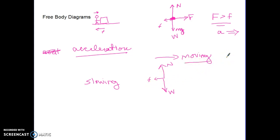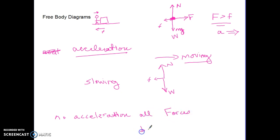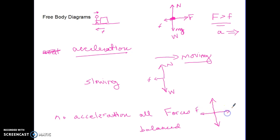If the net force is to the left but the object moves to the right, it's slowing down. If there's no acceleration, all forces are balanced — normal force equals weight, and the applied force equals friction, all drawn the same length. You can use free body diagrams to solve problems.